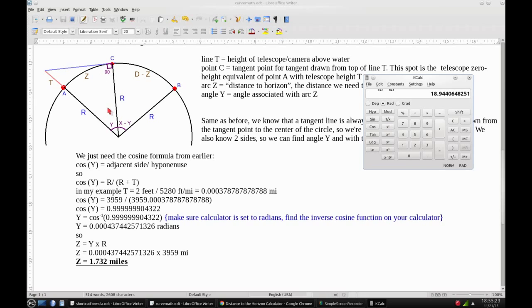Now we don't have any angles this time, but we do know two sides. We know R, and we know R and T on this side. So we can figure out any of the angles because we have those two. So again, we're going to need the cosine formula.